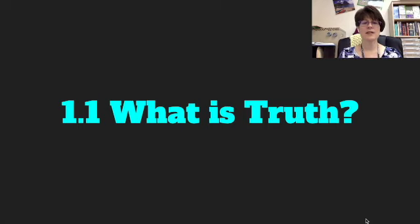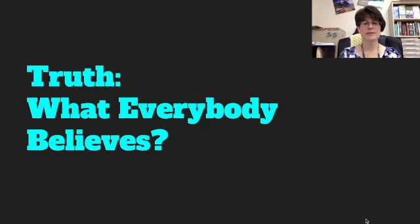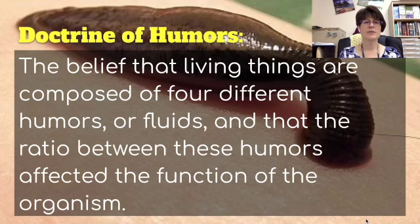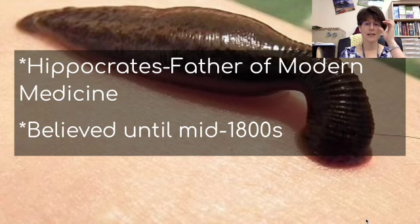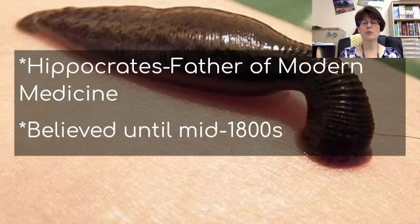The first thing I want to take a look at is: what is truth? Is truth what everybody believes? I want to look at something called the doctrine of humors. This was the belief that living things are composed of four different humors or fluids, and that the ratio between these humors affected the function of the organism. This was proposed by Hippocrates, considered to be the father of modern medicine. He was Greek, and this was believed from ancient times until the mid-1800s — a very long time. It is also why people were bled; that's why there's a picture of a leech in the background.